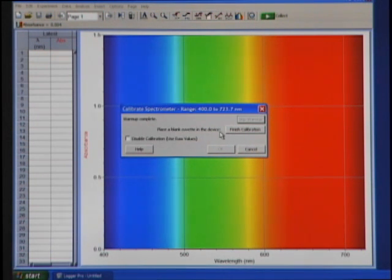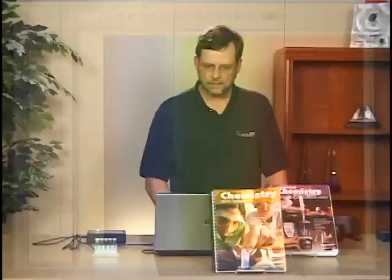It says to place a blank cuvette in the device and finish the calibration. So we click on that, and we click on OK, and the calibration's complete. That's all there is to it.